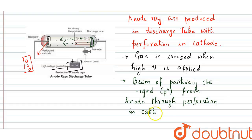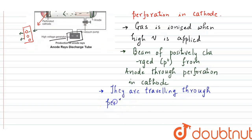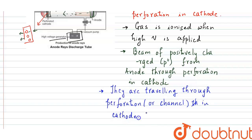Now, why are these also known as canal rays? Because these rays are getting through the canals or channels in the cathode. They travel from the anode to the cathode and through the perforations in the cathode — hence they are also known as canal rays. Thank you.